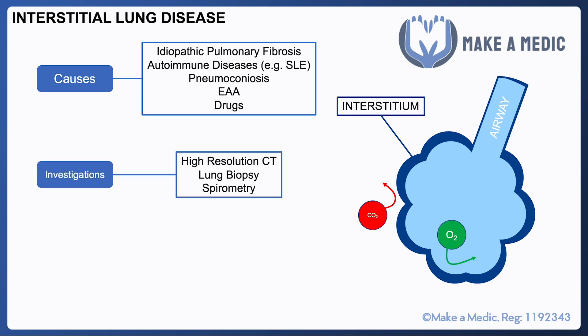The first line imaging option used for interstitial lung disease is a high resolution CT scan, which can really help evaluate how the lung tissue is structured. To really nail down a diagnosis and figure out what the cause may be, a lung biopsy is required. Sometimes spirometry may also be useful because it can demonstrate a restrictive pattern.